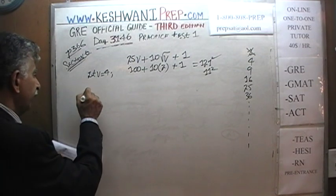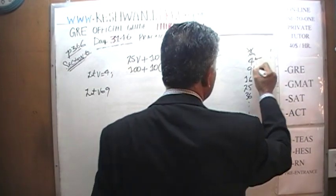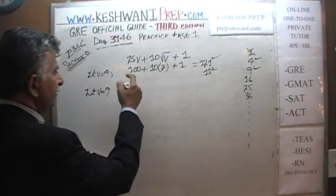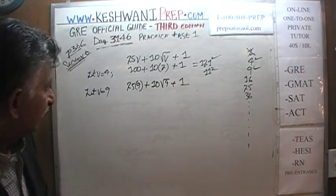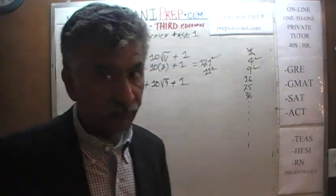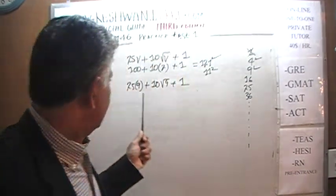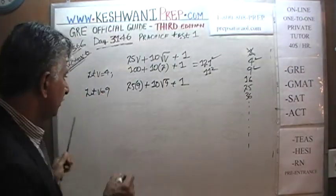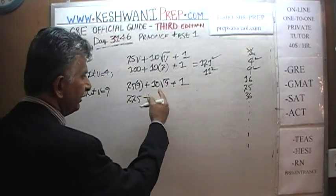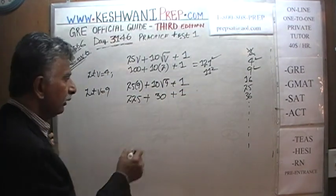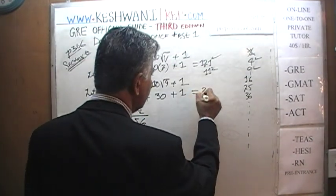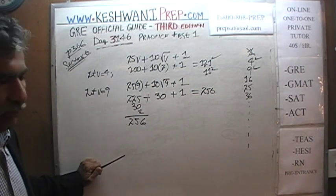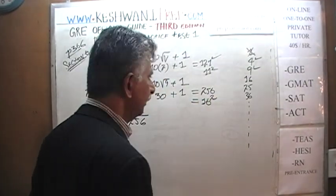Let's try the next one. Let V equal 9: 25 times 9 plus 10 times the square root of 9 plus 1. 25 times 9 — well, 25 times 10 is 250, so 25 times 9 is 25 less, which is 225. And 10 times 3 — since the square root of 9 is 3 — is 30, plus 1. So 225 plus 30 plus 1 gives us 256, which is also a perfect square — it's the square of 16. You have to know your squares from 1 through 20.